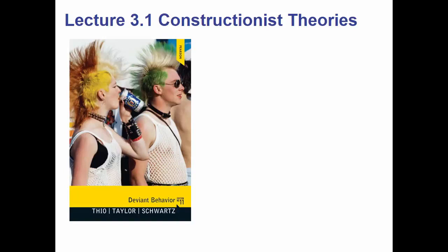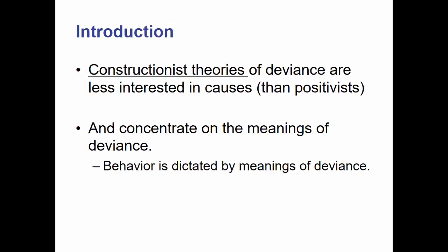This is lecture 3.1. Here we will be talking about constructionist theories. As I've noted, positivist theories are favored more by law enforcement type people. Constructionist theories tend to be more favored by social scientists. Constructionist theories of deviance are less interested in causes of deviance than they are in the type of people that create deviance and how those people get to be who they are. We concentrate on the meanings of deviance themselves. Behavior is dictated by meanings — what does that act mean to the person, rather than is it against the law or not?